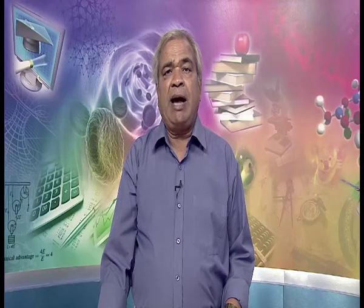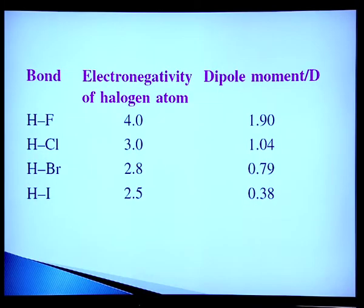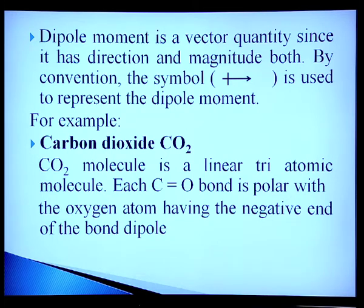The dipole moments of some molecules are given: bonds HF, HCl, HBr, and HI, along with the electronegativity of hydrogen atoms and their corresponding dipole moments. Dipole moment is a vector quantity since it has both direction and magnitude. By convention, the symbol → is used to represent the dipole moment direction.